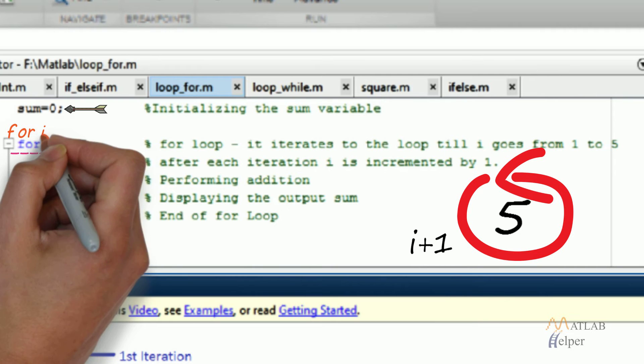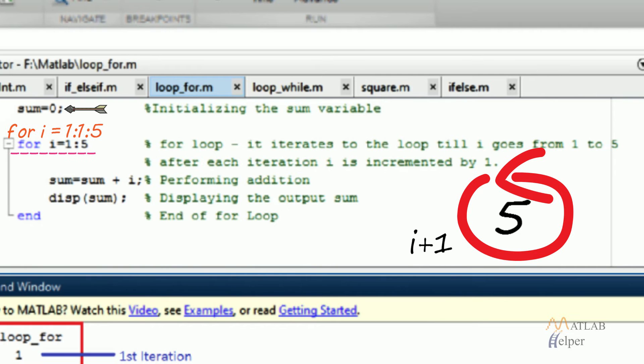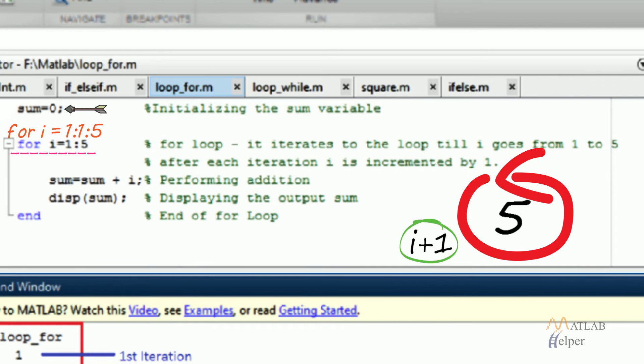It is similar to writing as for i=1:1:5, which tells that the loop gets executed while i value goes from 1 to 5 with an increment of 1 in i value after each iteration.